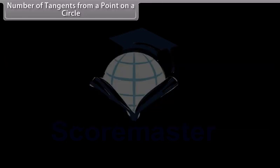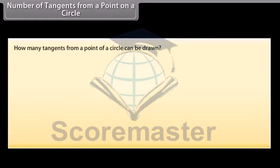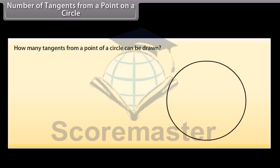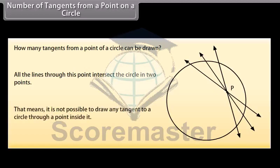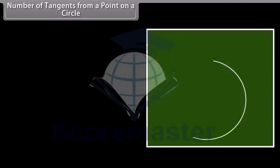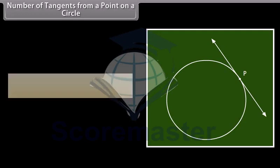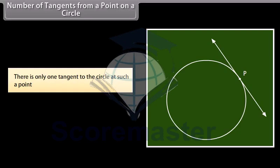Can you guess how many tangents from a point on a circle can be drawn? Let's perform an activity to check this out. Draw a circle on your notebook and take a point P inside it. Draw lines through this point. We will find that all the lines through this point intersect the circle in two points, so it is not possible to draw any tangent to a circle through a point inside it. Now take a point P on the circle and draw tangents through this point. We can observe that there is only one tangent to the circle at such a point.